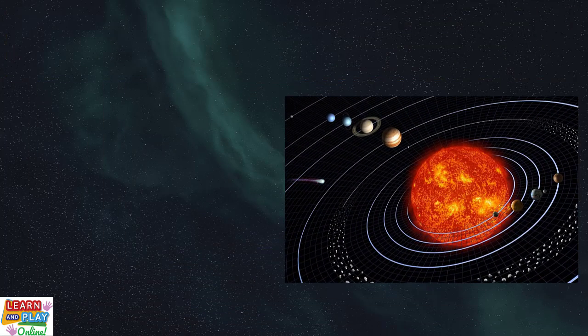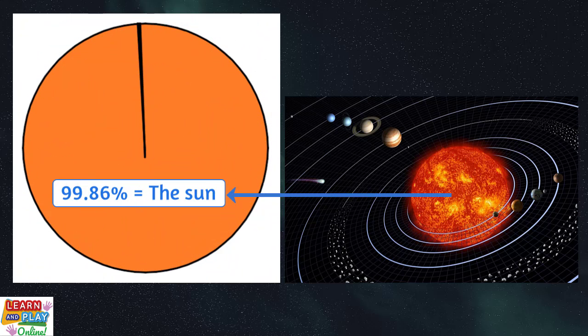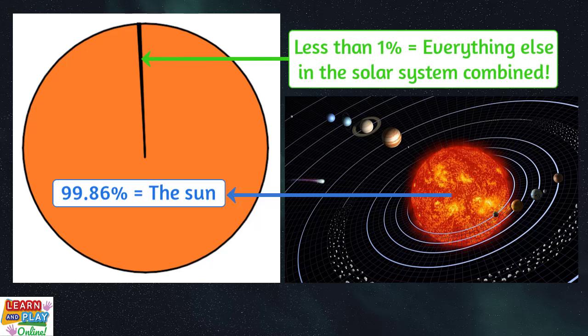If you were to compare the sun's mass to everything else in our solar system, the sun would make up a whopping 99.86%. That means if you collected everything else in our solar system, including the planets, moons, comets, asteroids, and any other celestial bodies you can think of, they would only account for less than 1% of the entire mass of our solar system.